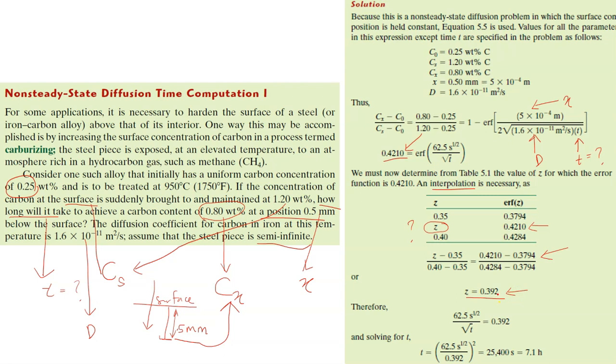And you can actually substitute back into this because you know that this is ERF Z. So, X over 2DT square root divided by T square root equals to 0.392. Solving this, meaning you are solving for T, you will get 7.1 hour or 25,400 seconds.